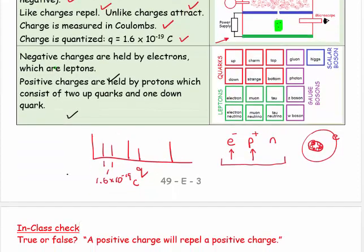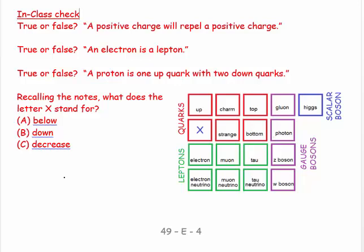True or false: a positive charge will repel a positive charge—very true. An electron is a lepton—true. A proton is one up quark with two down quarks—actually it's two up quarks and one down quark, so that's false. Recalling the notes, what does the letter X stand for? It's up and down—they named them in pairs: up and down, charm and strange, top and bottom. There's some logic to it.